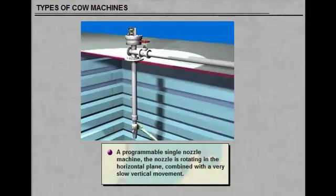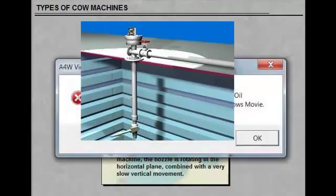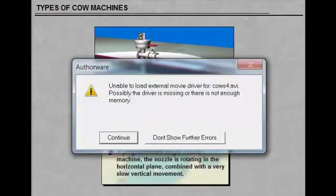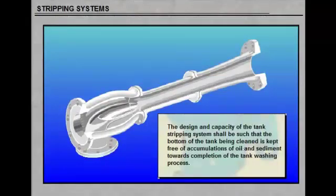The design and capacity of the tank stripping system shall be such that the bottom of the tank being cleaned is kept free of accumulations of oil and sediment towards completion of the tank washing process. The stripping system shall be capable of removing oil at a rate of 1.25 times the total throughput of all the tank cleaning machines to be operated simultaneously when washing the bottom of the cargo tanks.